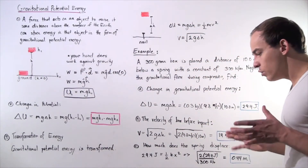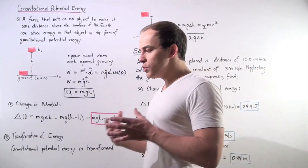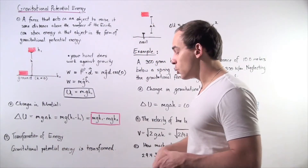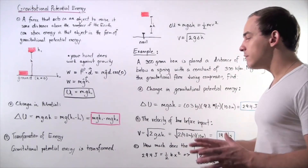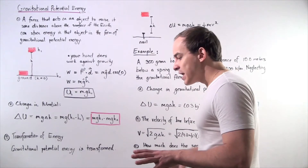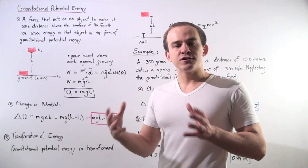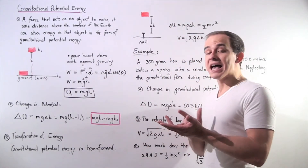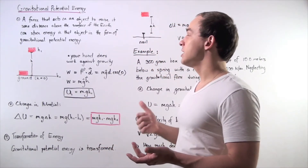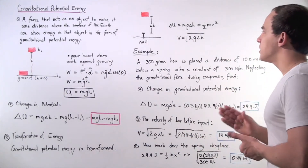Whenever we talk about kinetic energy and gravitational potential energy, we usually talk about a transfer or transformation of energy. Gravitational energy has the ability to transform into different types of energy. In general, energy is one concept that can be transformed into different types — for example, elastic potential energy, mechanical potential energy, gravitational potential energy, electrostatic potential energy, and so on.